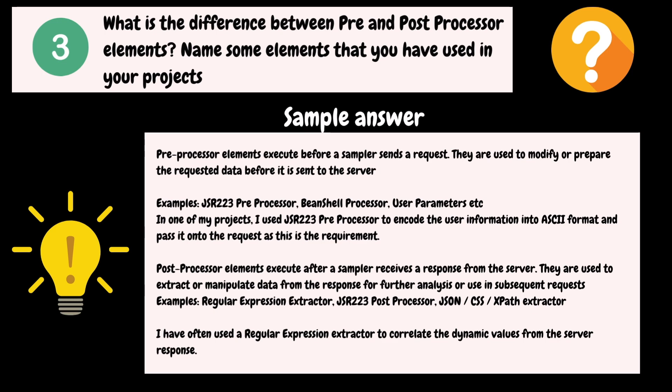In one of my projects, I used the JSR223 Pre-Processor to encode user information into ASCII format and pass it on to the request, as that was the requirement. Post-processor elements execute after a sampler receives a response from the server. They are used to extract or manipulate data from the server for further analysis or for use in subsequent requests. Some post-processor elements are Regular Expression Extractor, JSR223 Post-Processor, JSON, CSS, and XPath Extractor. I have often used a Regular Expression Extractor to correlate dynamic values from the server response.